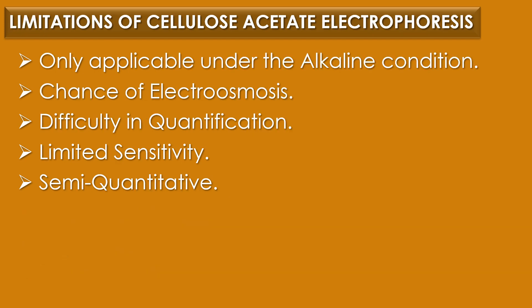There are five limitations of cellulose acetate electrophoresis. The first limitation is that it is only applicable under alkaline conditions — it can only be used when the buffer is alkaline. The second limitation is the chance of electroosmosis, as sulfonic and carboxylic acid residues can induce electroosmosis. The third limitation is difficulty in quantification, as the process requires extensive blotting techniques to quantify the amounts of components after separation.